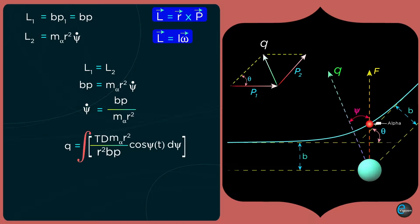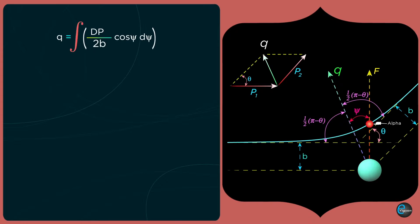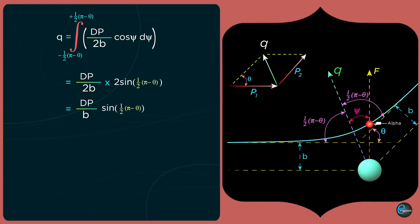Since kinetic energy T = p² / (2m_α), substituting into the integral gives q = ∫(p / 2b) cosψ dψ. From the diagram, ψ varies from −(π/2 − θ) to +(π/2 − θ). So q = (p / 2b) · 2sin(π/2 − θ) = (p / b) · sin(π/2 − θ), which gives q = (p/b) · cos(θ/2).